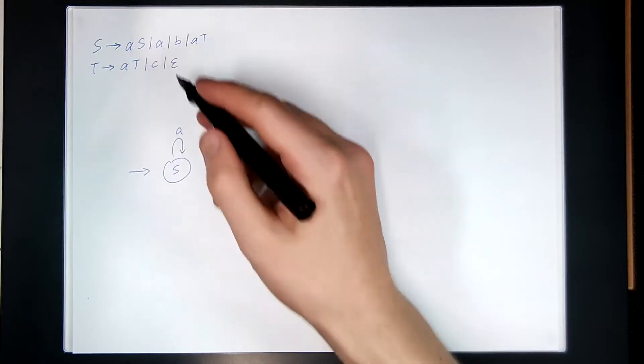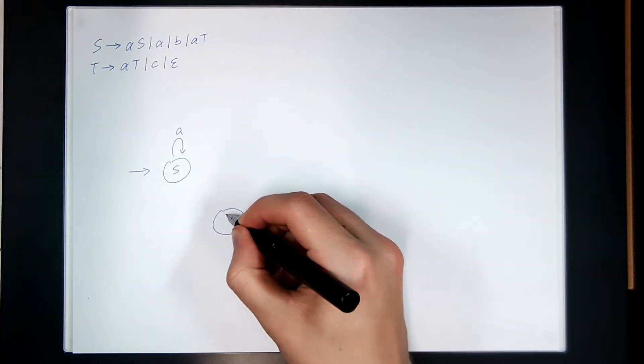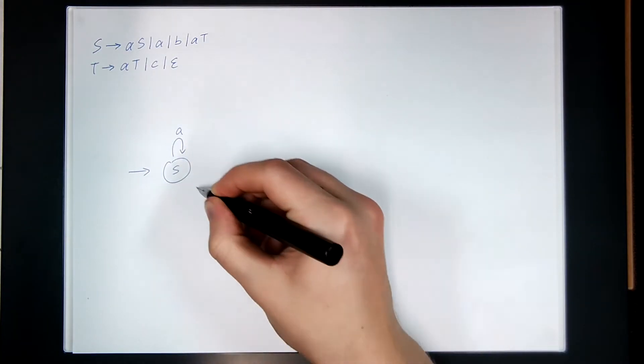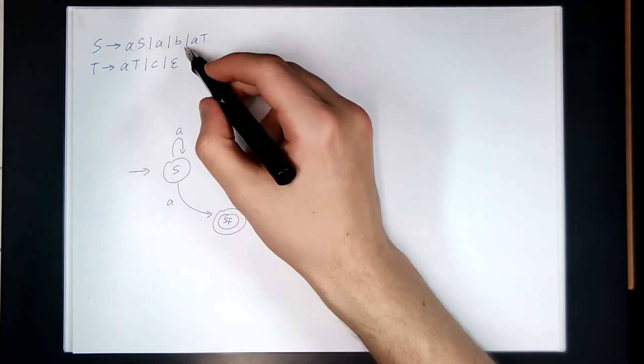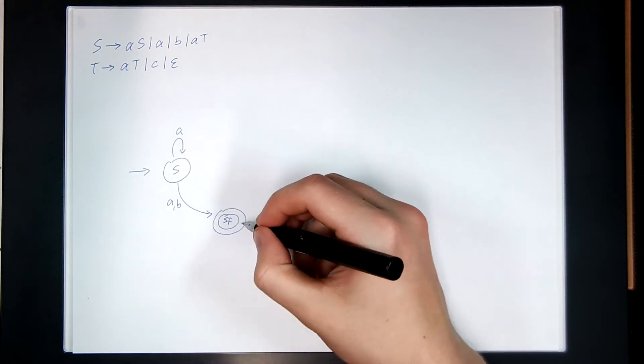S can also go straight to A and no further, so that means I have to add a new final state SF. Reading an A takes me straight to there. And S goes to B, so reading a B would also take me to the final state.